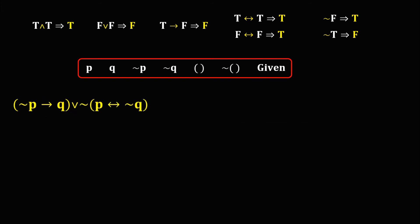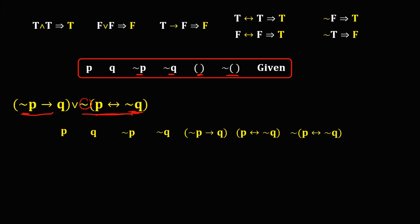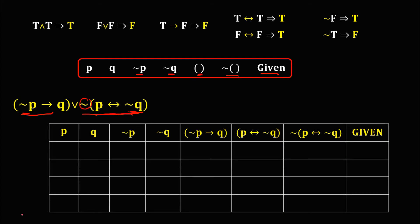For this next given, again start the table with the given variables — P then Q, then the negation of P, the negation of Q, two parenthesis columns, then the negation of a parenthesis, and the last column must be the given. Since there are two variables, this table has four rows. The values of P and Q are permanent.